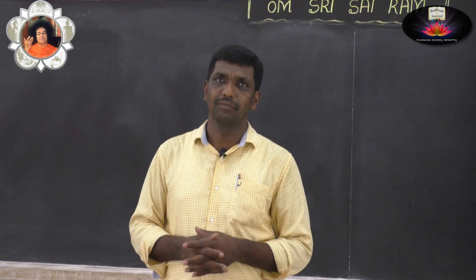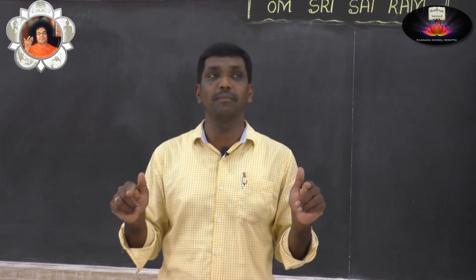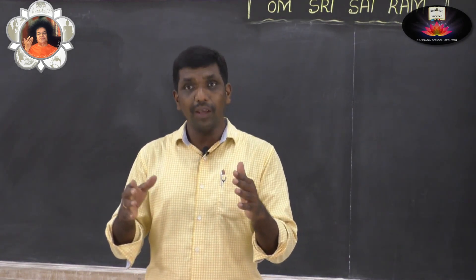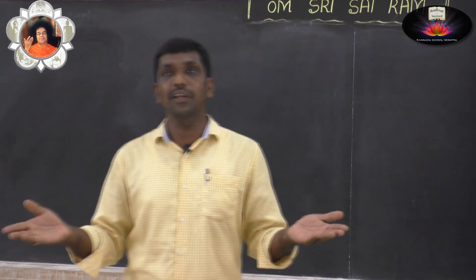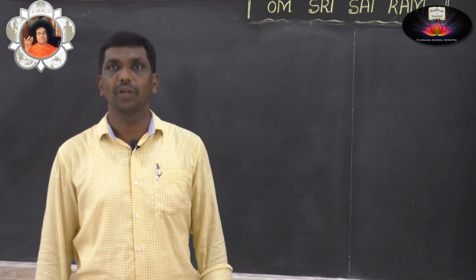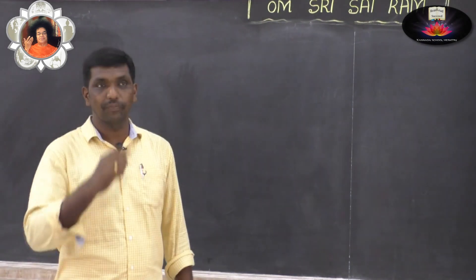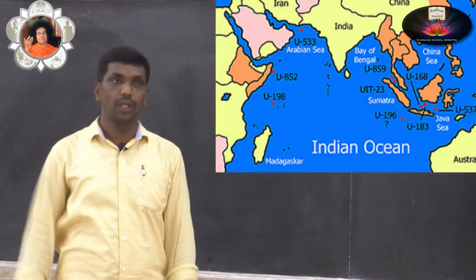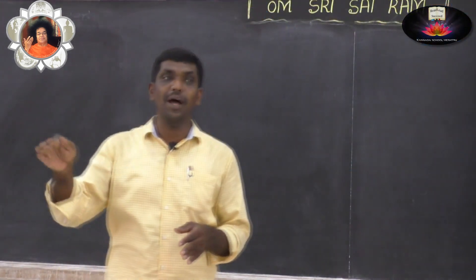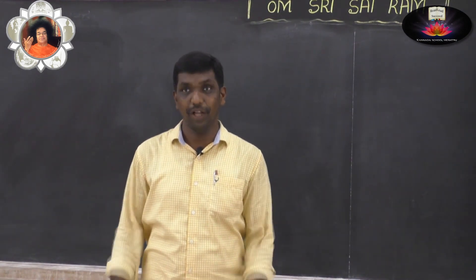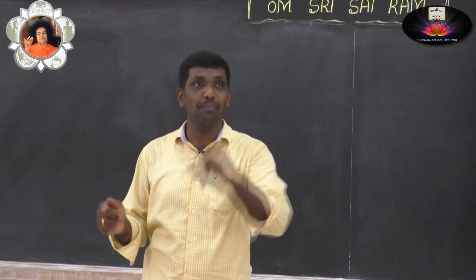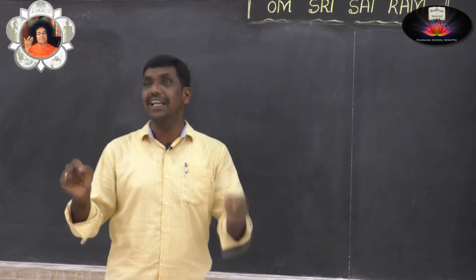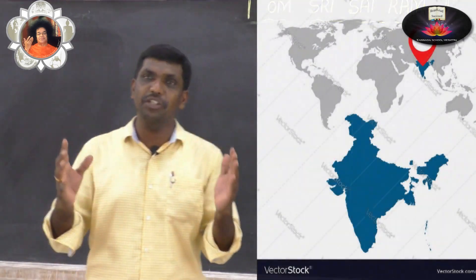What does it mean? The land that is situated to the north of the ocean — here, ocean means Indian Ocean — and the south of the Himalayas is known as Bharatavarsha. It is clearly mentioned in Vishnu Purana.